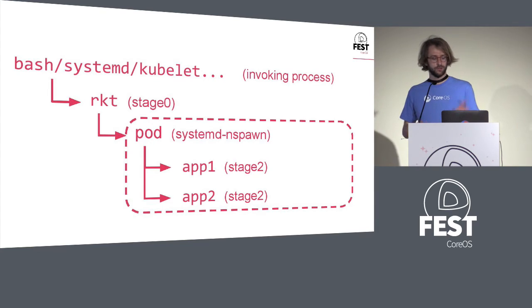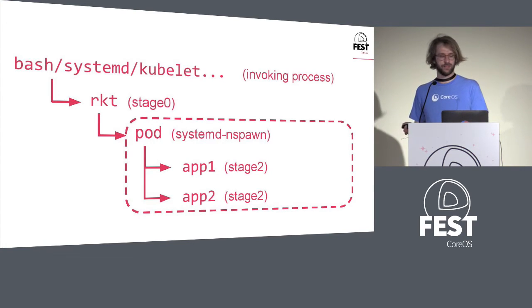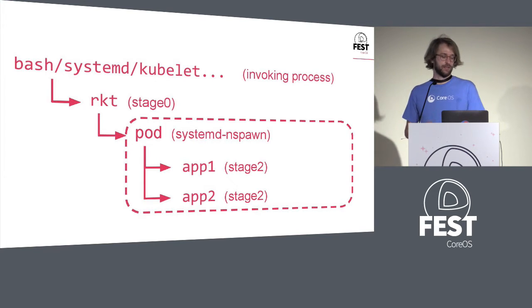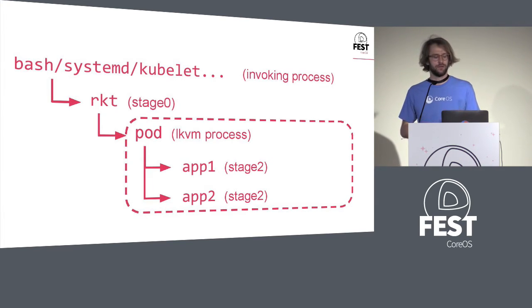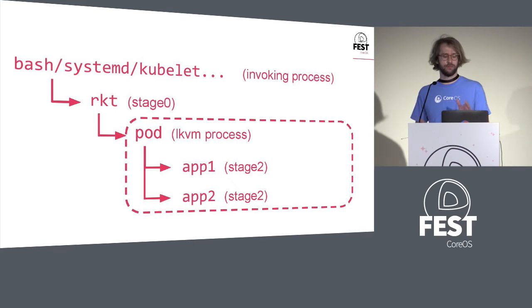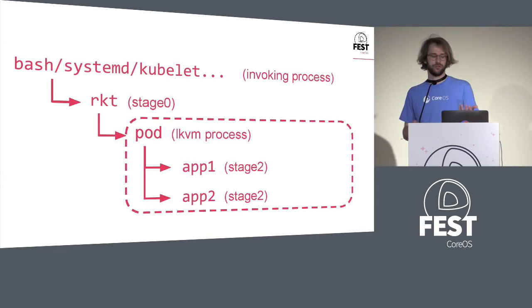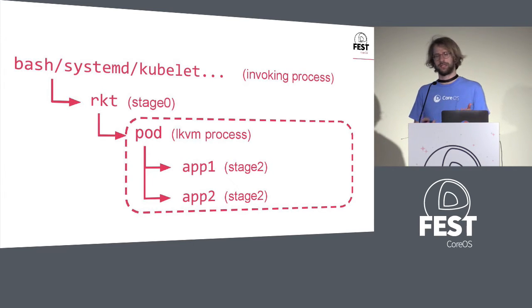Stepping back to what that looks like with the different stages: in this case, with the default stage one, it runs the pod based on systemd-nspawn. But if you change Rocket's configuration to point to the LKVM stage one instead, all the other things look the same — all the operations you run on the command line look the same. To the application, the environment should look exactly the same. But the actual technology being used to run the pod has changed, and you get the advantages that these different stage ones can provide.